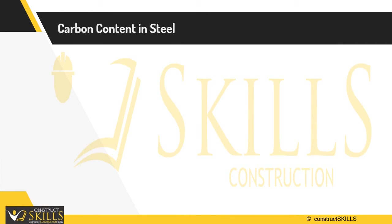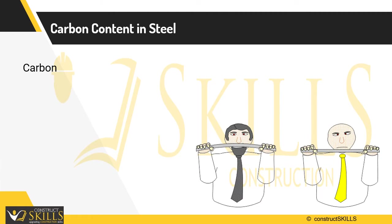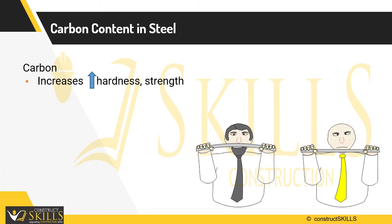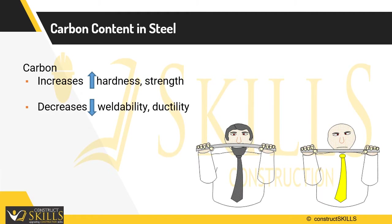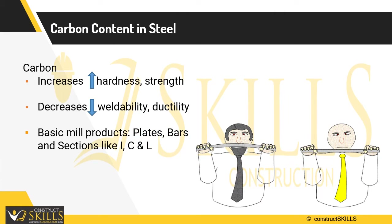Too little carbon content leaves pure iron quite soft, ductile, and weak. The addition of a very small amount of carbon — up to 2% in iron — changes steel's properties: it increases hardness and strength, and decreases weldability and ductility. Steel mills produce a variety of products, in which the basic products are plates, bars, and sections such as I-beams, channels, and angles.